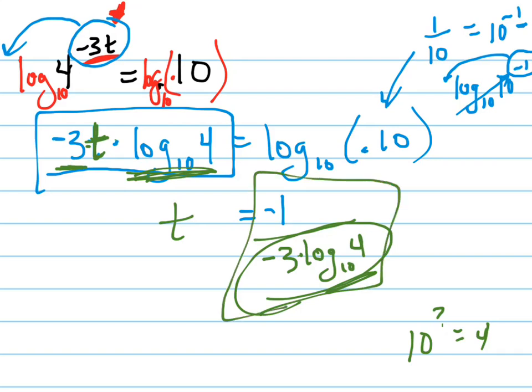If they want it in exact notation, then this is what you would leave it. Well, actually, what can I do with the negatives? Yeah, the negative divided by negative is positive. So the simplest form, if they want an exact answer, is 1 over 3 log of 4. Or you don't have to write the 10 in there because it'll be assumed.